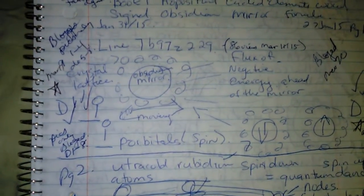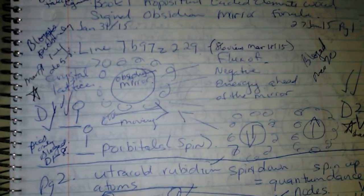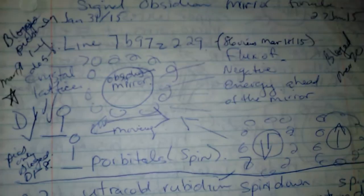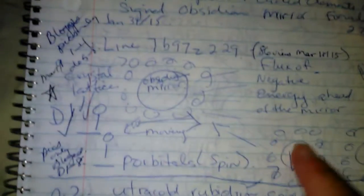This is diagram one showing an obsidine mirror. It shows the flux of negative energy ahead of the mirror, which would be in this area here.